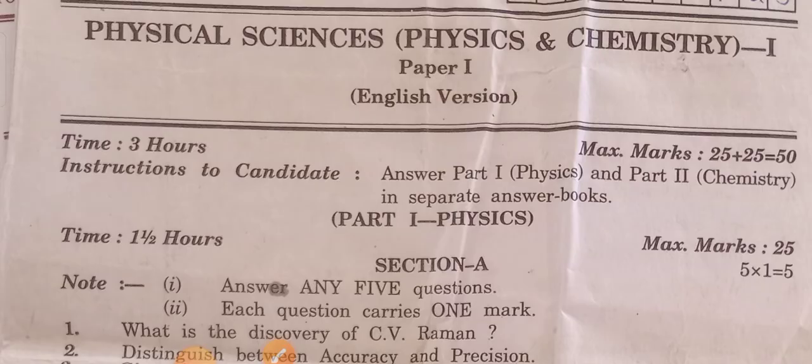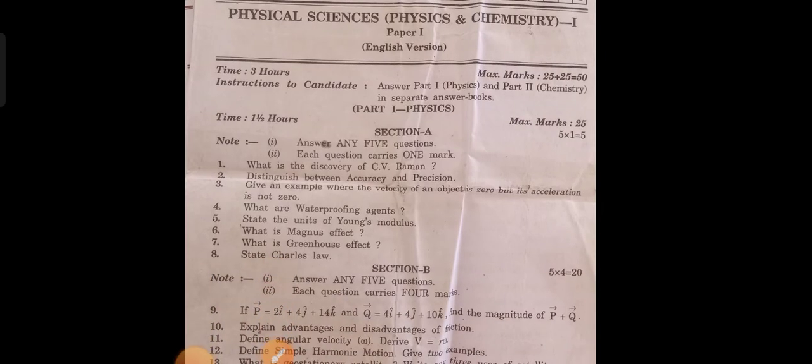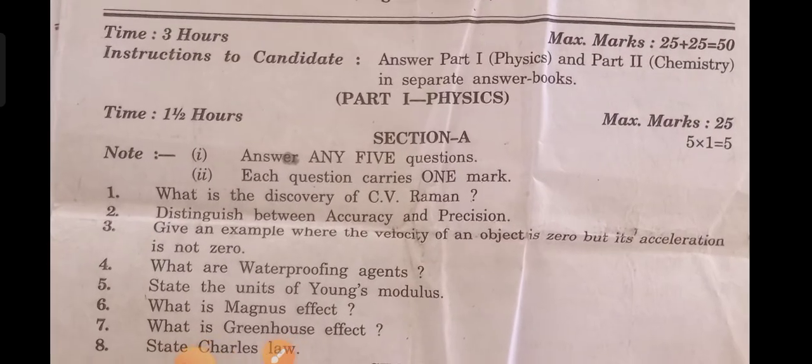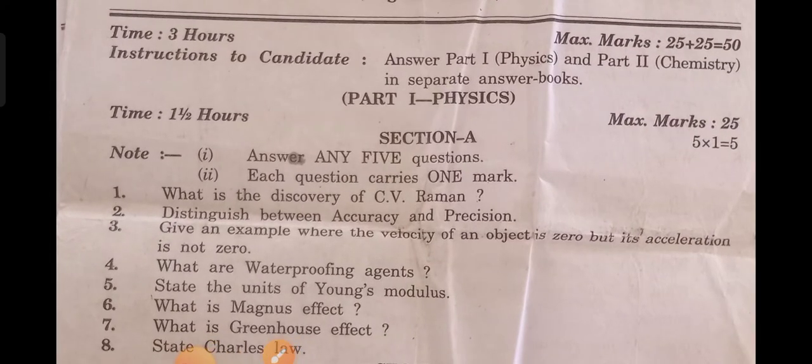Physics and Chemistry, English version. Physics 50 marks, Chemistry 50 marks, pass marks separately. You have to pass in each subject — 99 marks.